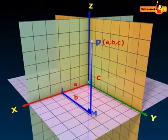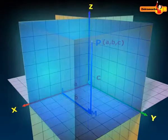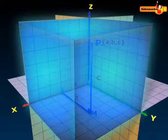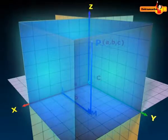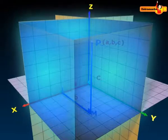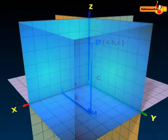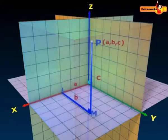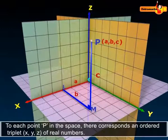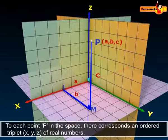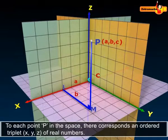in the octant XOYZ, and so all a, b, and c are positive. If P was in any other octant, then the signs of a, b, and c would change accordingly. Thus, to each point P in the space there corresponds an ordered triplet (x, y, z) of real numbers.